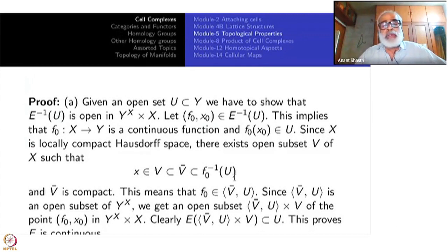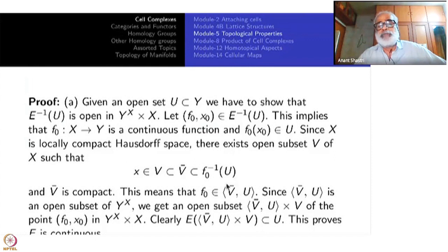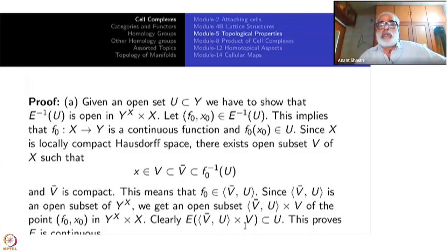Inside every open subset you can find a compact neighborhood — that is the local compactness part. This means F₀ of V-bar is contained inside U, which is the same as saying F₀ is in [V-bar, U]. V-bar is compact and U is open, so this is actually one of the sub-bases and is an open set. Since [V-bar, U] is open in Y power X, we get an open set [V-bar, U] cross V in the product, which is a neighborhood of (F₀, x₀).